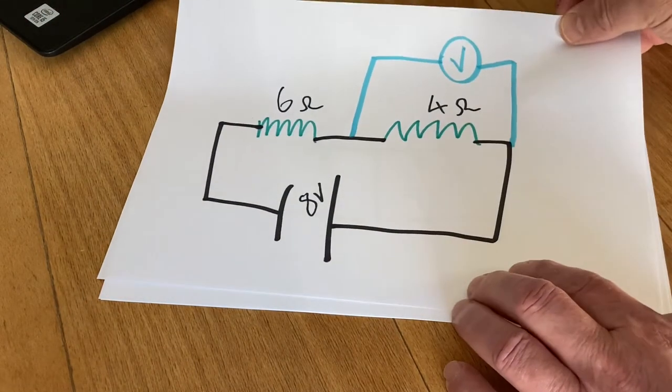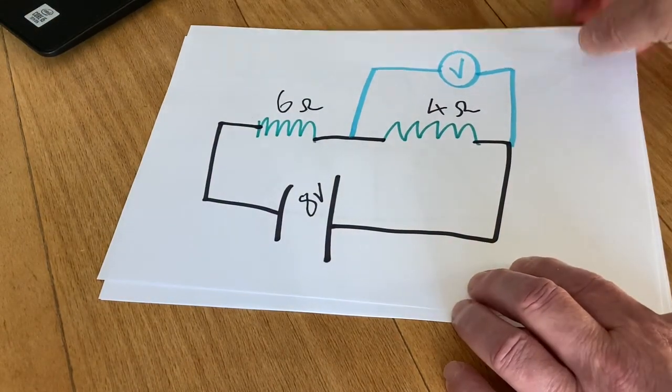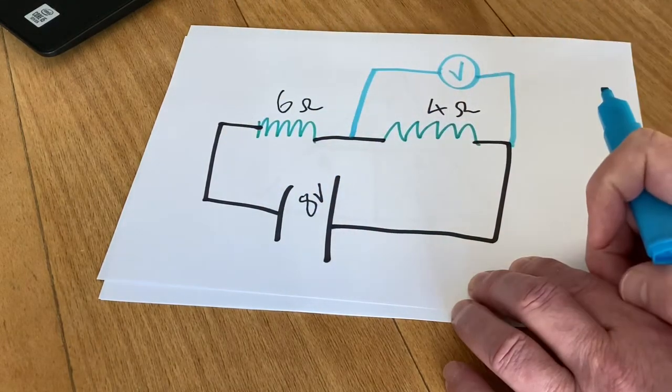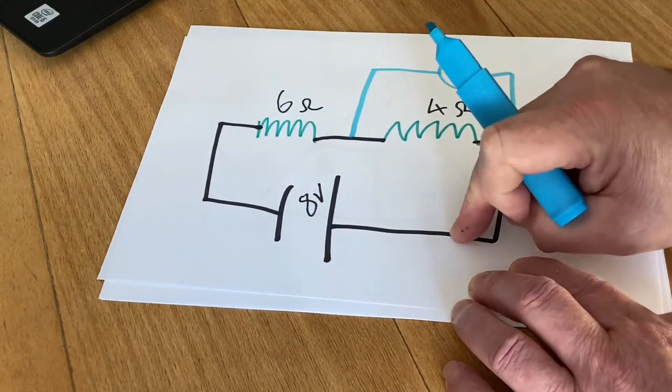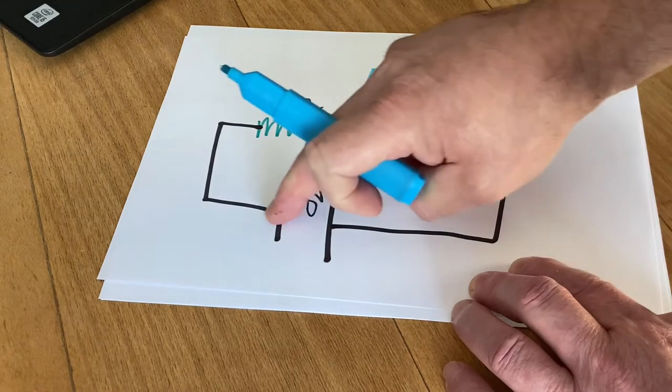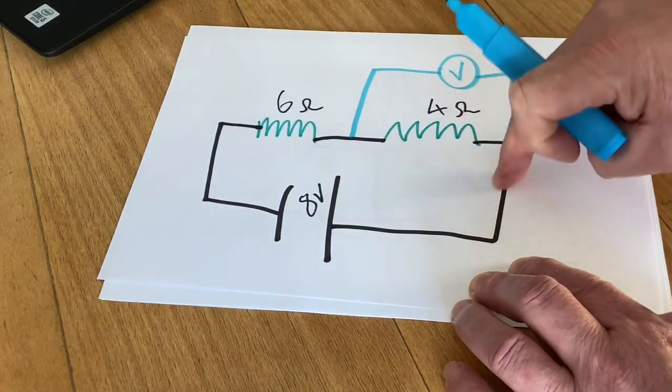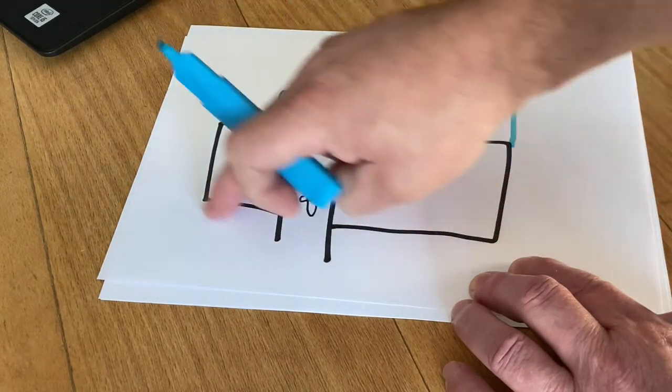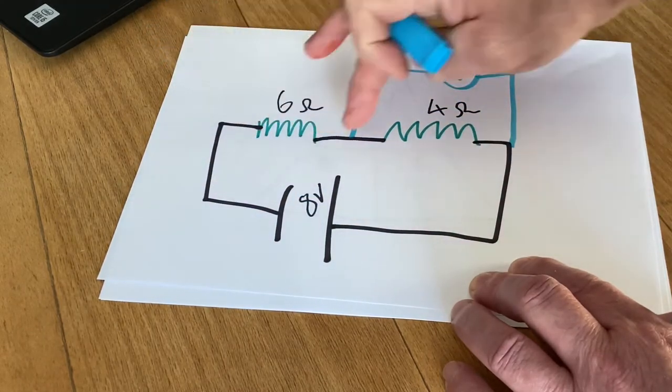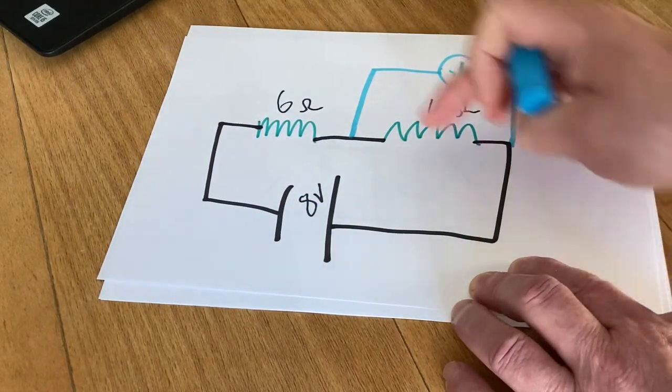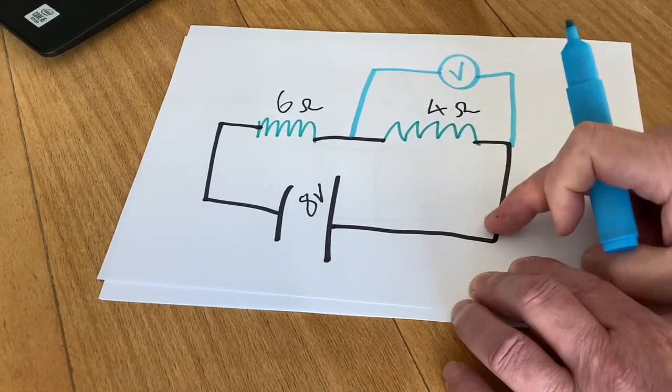Now the diagram on the question doesn't tell you the amperage. Amperage is a measure of current and the current, whatever's flowing here, will also be flowing here. So the current, the flow, at any point around this circuit, because it's a series circuit, will always be the same.